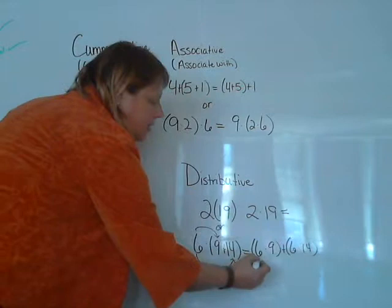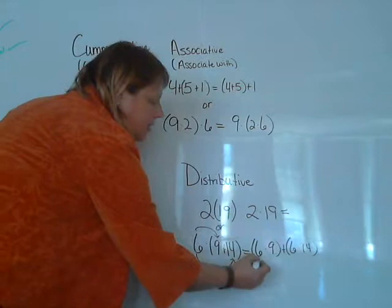So we have 6 times 9 plus 6 times 14. The 6 is just distributed—it's passed out among the other numbers.